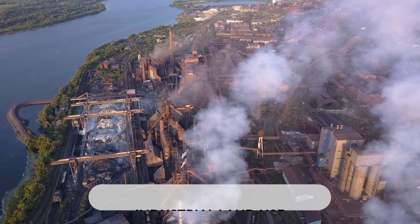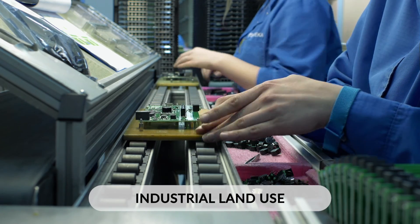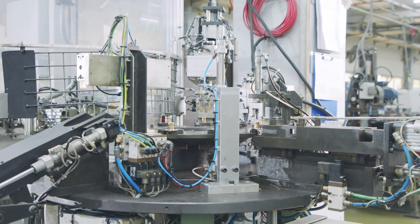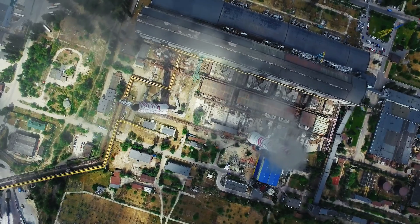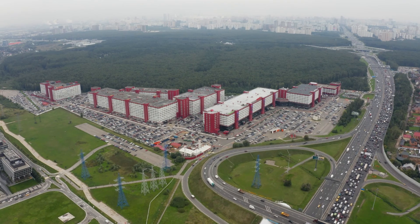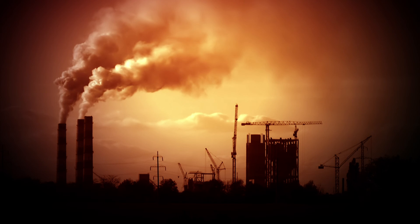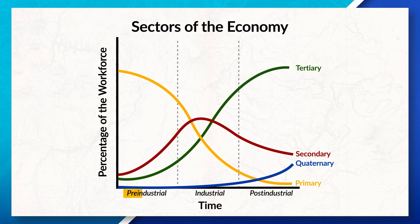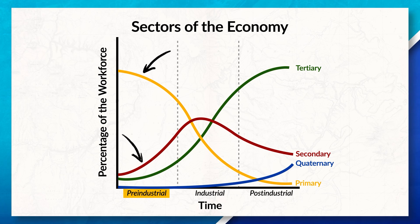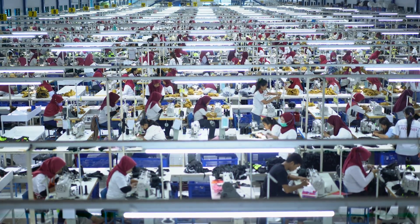Industrial land use patterns are generally associated with areas where manufacturing, production, and other industrial activities take place. These areas may include factories, warehouses, industrial parks, or specialized industrial zones. Industrial land use patterns are typically found away from residential and commercial areas, as they have higher rates of pollution and lower land values. Areas with emerging economies and more jobs in the secondary sector tend to have more industrial areas.